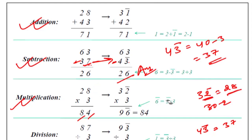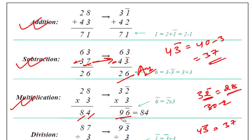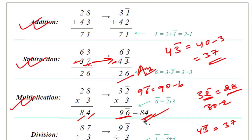28 equals 32 bar. So here I have written 32 bar and now multiply with 3. 3 twos are 6 — this will become a 6 bar. And 3 threes are 9. So this is 96 bar. 96 bar means 90 minus 6, which is 84.